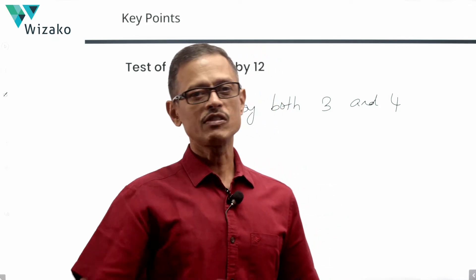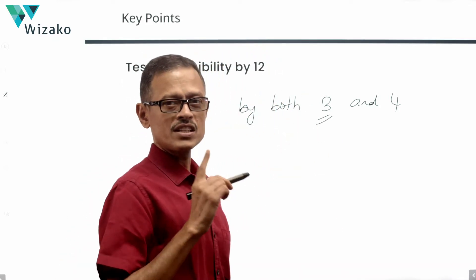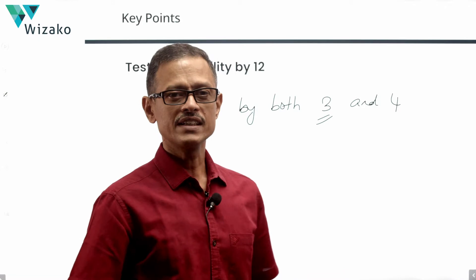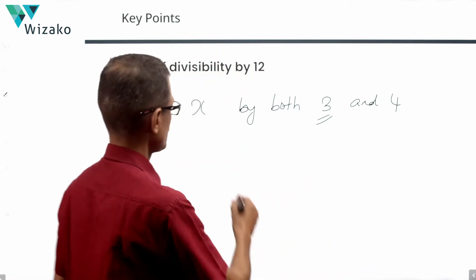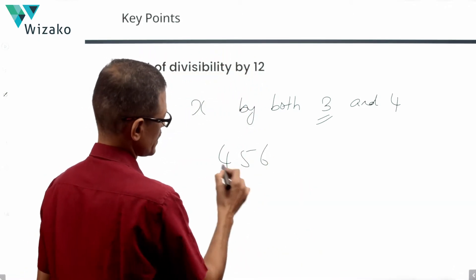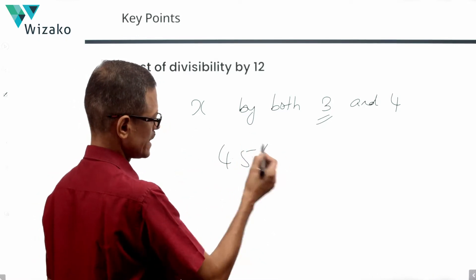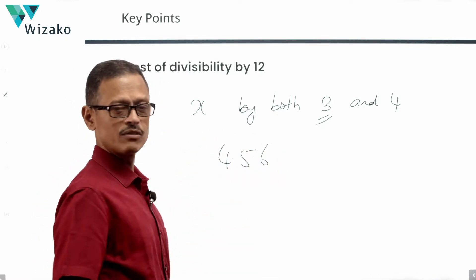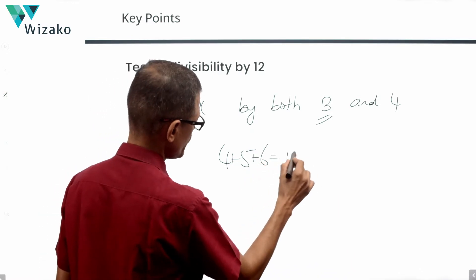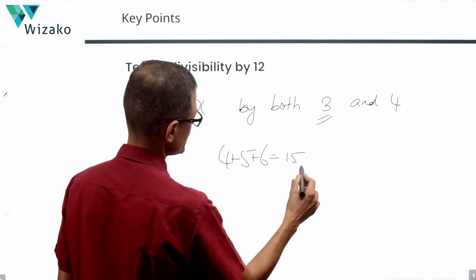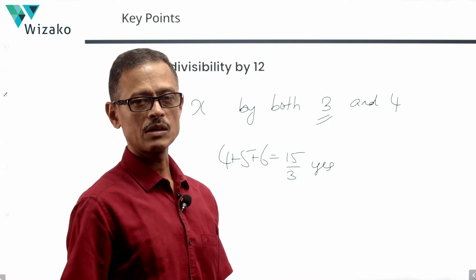Let us quickly spend half a minute on the test of divisibility for 3. The test is: add up the digits of the number. For example, take the number 456. Add up the digits: 4 plus 5 plus 6 equals 15. Is 15 divisible by 3? Yes. Therefore, 456 is divisible by 3.